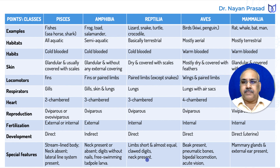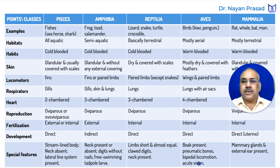In reptiles, neck is present. In birds, a beak is present — the mouth is prolonged into a beak. Bones are pneumatic, meaning hollow and air-filled, to keep body weight less. They have bipedal locomotion, moving with two legs, and acute distant vision. In mammals, special features include the presence of mammary glands and external ear.